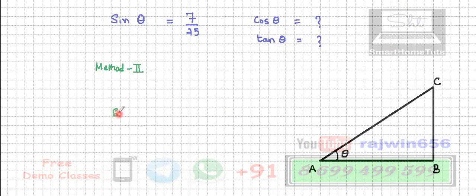Sine theta is opposite side upon hypotenuse. So that is going to be 7 upon 25.